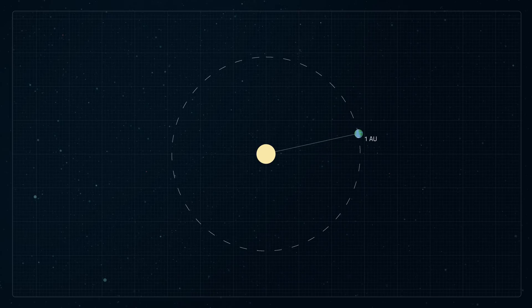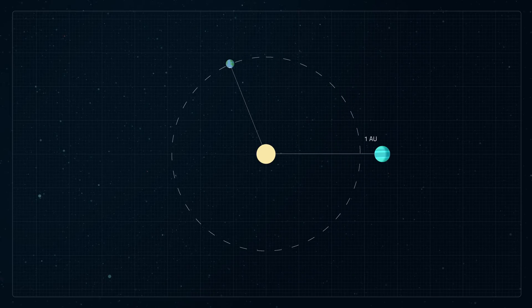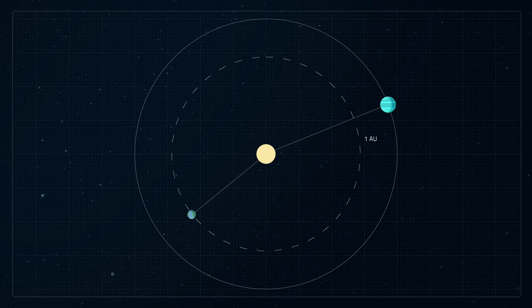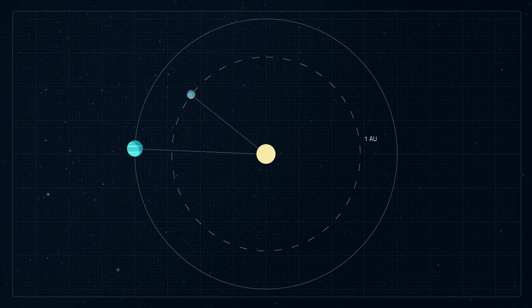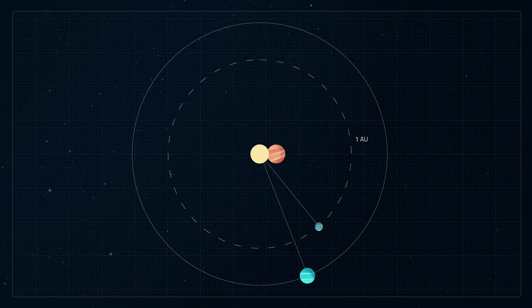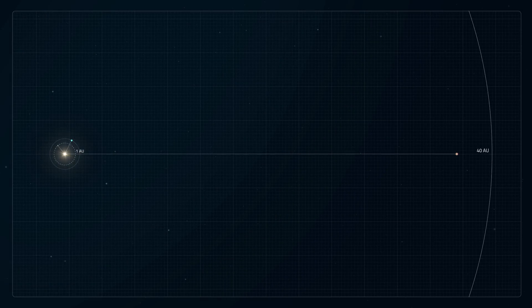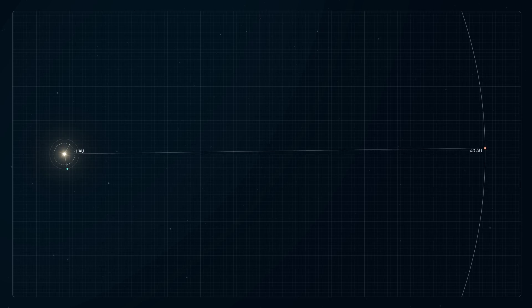WFIRST's coronagraph will directly image and analyze Neptune-sized planets in orbits slightly greater than Earth's. Existing coronagraphs can only image larger planets that are much more distant from their host stars, so this new capability represents a dramatic improvement.